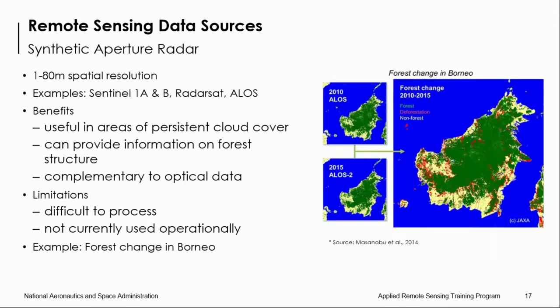Another remote sensing data source is SAR, or synthetic aperture radar, which can range from 80 to 1 meter spatial resolution. Examples include Sentinel data products provided by the European Space Agency. SAR is useful for areas of persistent cloud cover because it can see through clouds. It can also provide information on forest structure and complements optical data well. A limitation is that it can be difficult to process — it takes a lot of practice.